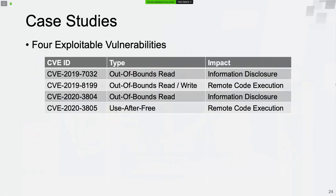Finally, it's time to talk about the vulnerabilities. I will talk about four exploitable vulnerabilities. The first is an out-of-bounds read vulnerability which could lead to information disclosure. The second is an out-of-bounds read and write vulnerability which could lead to code execution. The third is also an out-of-bounds read vulnerability leading to information disclosure. The last is an out-of-bounds read vulnerability leading to code execution.